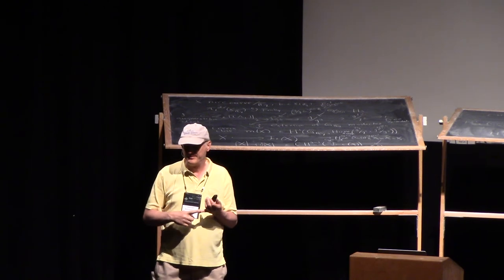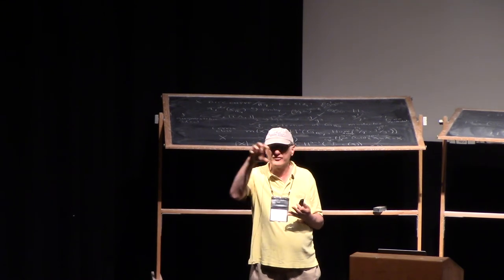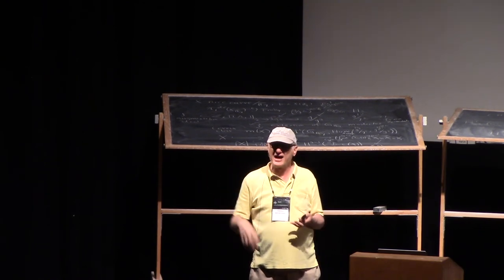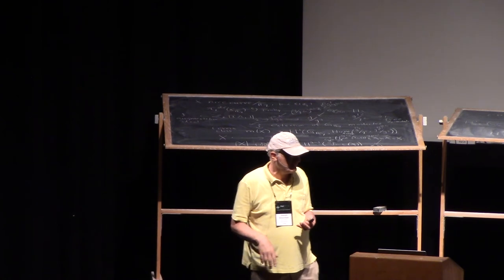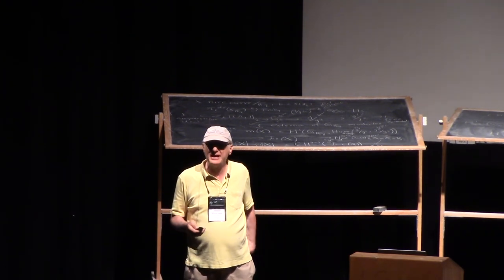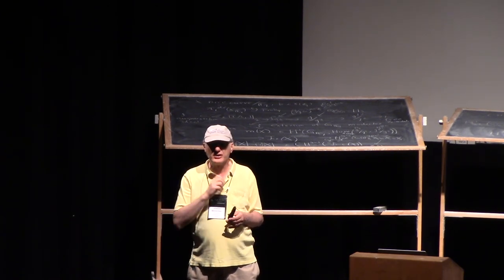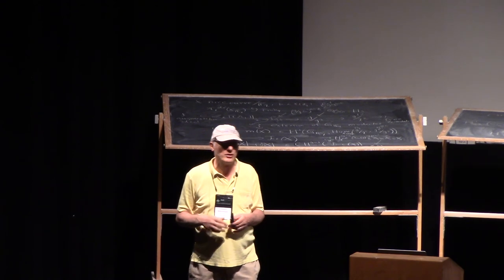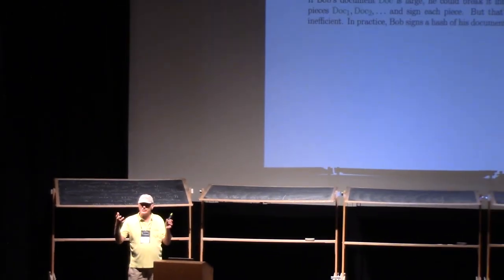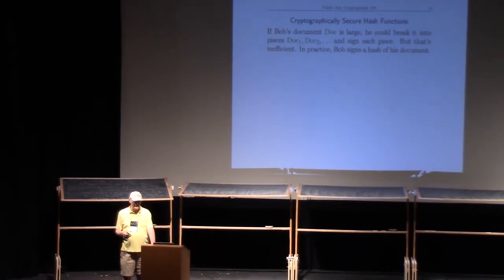It has the added problem that each part of the file is signed separately, so the file isn't tied together. What people do instead is they sign what's called a hash function. If you've taken CS classes, you've probably seen hash functions and hash tables—they're used for efficient sorting. These are a little trickier because the hash function has to be cryptographically secure. Bob takes this huge document, runs it through a hash function, and actually signs the hash value, not the document itself.